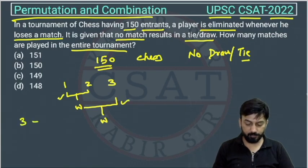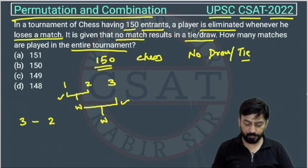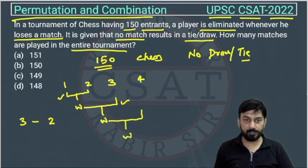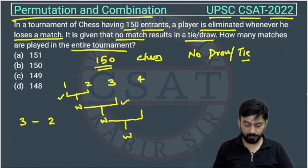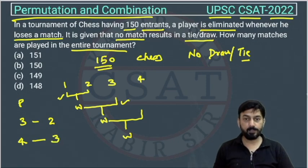Now suppose there are four players. The matches happen: first, second, third — this winner plays with the remaining one, and then the final winner comes. So if there are four players, the number of matches will be three.